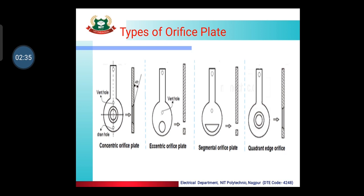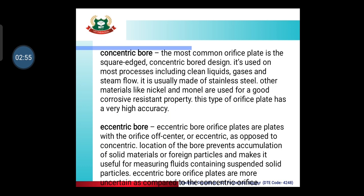This is the orifice plate — a thin layer with a hole drilled in it. There are four types of orifice plates: the first is the concentric orifice plate, the second is the eccentric orifice plate, the third is the segmental orifice plate, and the fourth is the quadrant edge orifice plate. The concentric bore is the most common orifice plate — it is a square rigid concentric bore design used on most processes including clean liquids, gases, and steam flow. It is usually made of stainless steel; other materials like nickel and monel are used for good corrosion-resistant properties. This type of orifice plate has very high accuracy.